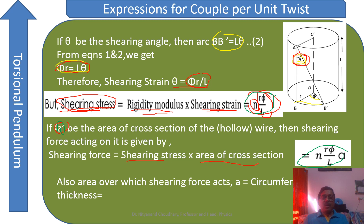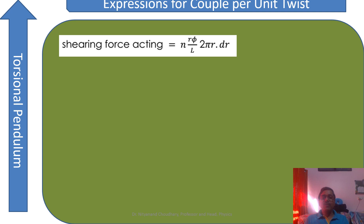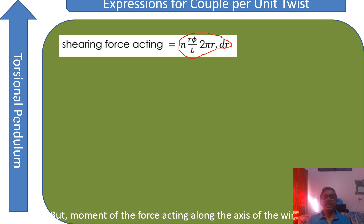The area of the elemental hollow cylinder is its circumference multiplied by its thickness: area = 2πr·dr. Therefore, the shear force acting on this hollow cylinder is: shear force = (ηrφ/L) × 2πr·dr = 2πηrφ/L × r·dr = ηφ/L × 2πr²·dr. Substituting: shear force = ηrφ/L × 2πr·dr.